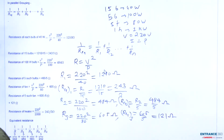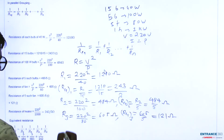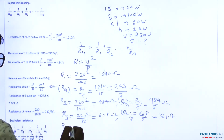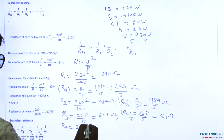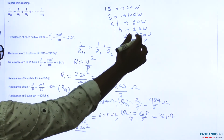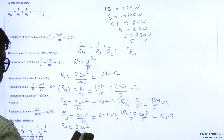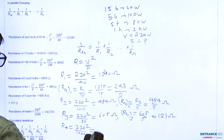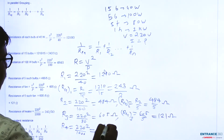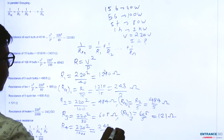Now we find the resistance for the heater. R4 = V²/P = (220)²/1000, since the power capacity is 1 kilowatt = 1000 watt. This gives R4 = 242/5 ohm.